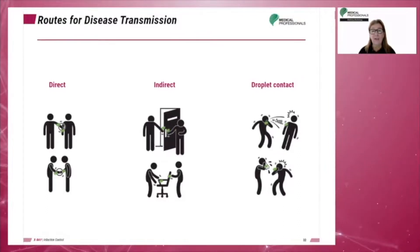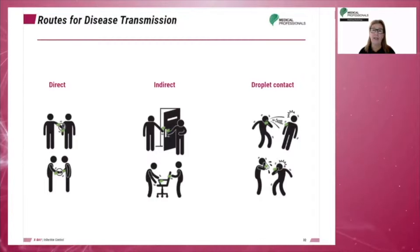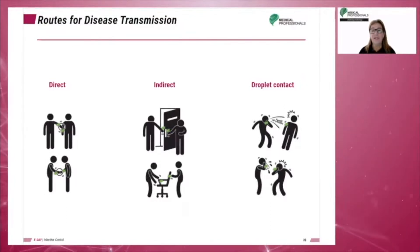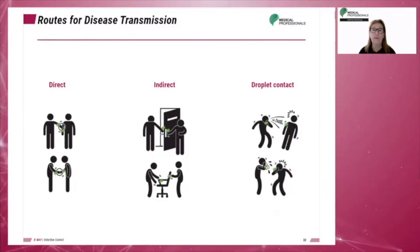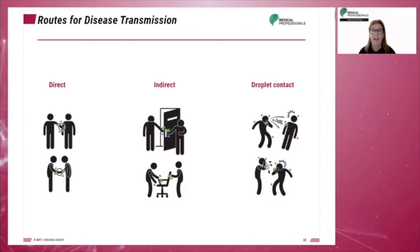Indirect contact involves touching an inanimate object that has been contaminated by an infected person. The inanimate object is called a fomite. A fomite is, therefore, any contaminated object that can spread an infection — for example, a doorknob.